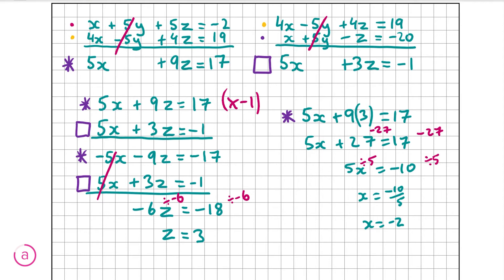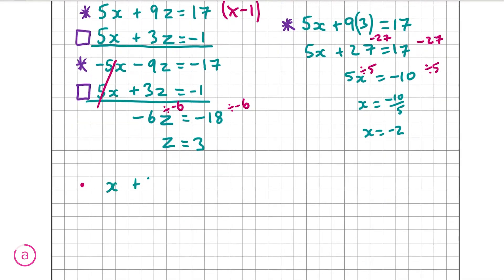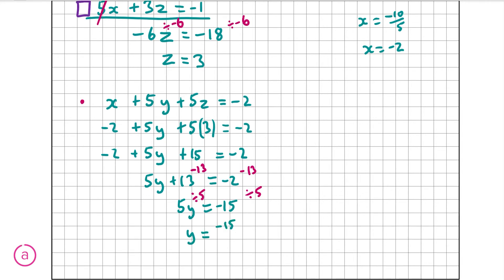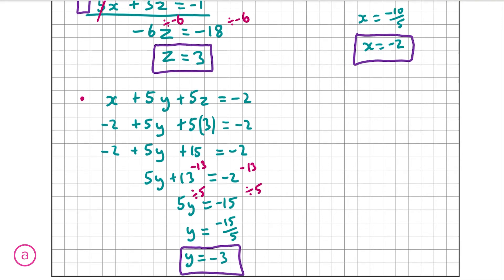Now that we have z and x, I'm going to pick the pink equation — x plus 5y plus 5z equals minus 2 — and substitute in z equals 3 and x equals minus 2. We get minus 2 plus 5y plus 15 equals minus 2, which gives 5y plus 13 equals minus 2. Subtracting 13 from both sides gives 5y equals minus 15, and dividing by 5 gives y equals minus 3. So our answers for question 1 part a are: x equals minus 2, y equals minus 3, and z equals 3.